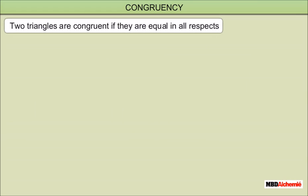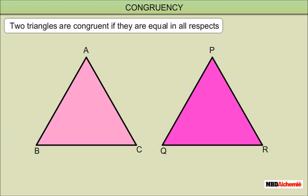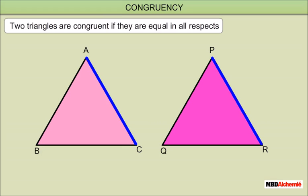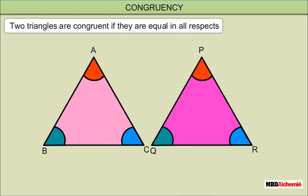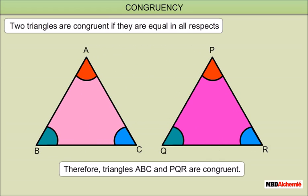Two triangles are congruent if they are equal in all respects. In the above two figures of the triangle, AB is equal to PQ, BC is equal to QR, AC is equal to PR, and angle A is equal to angle P, angle B is equal to angle Q, and angle C is equal to angle R. Thus, triangles ABC and PQR are equal in all respects. Therefore, triangles ABC and PQR are congruent.